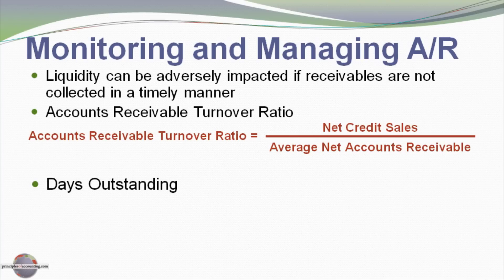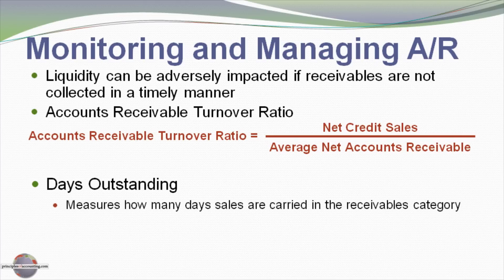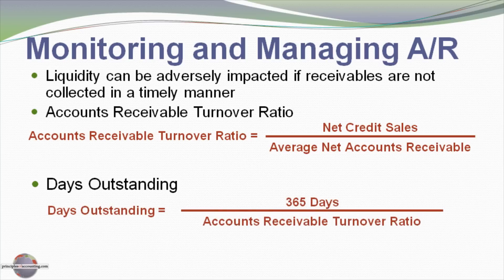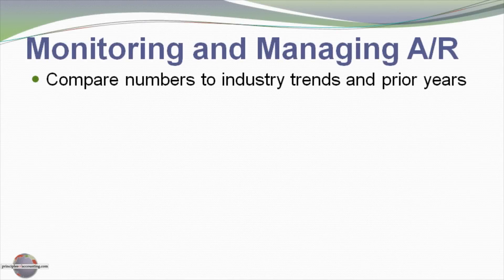A related ratio is days outstanding. It measures how many days sales are carried in the receivables category, and it is 365 days divided by the accounts receivable turnover ratio from above. We also want to compare our numbers to discern trends against industry competitors as well as against prior years.